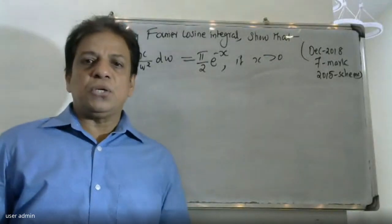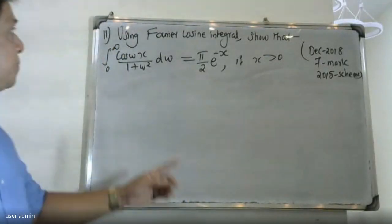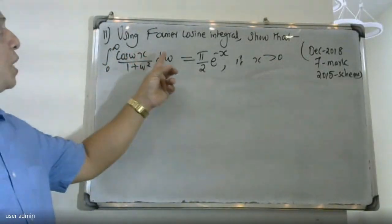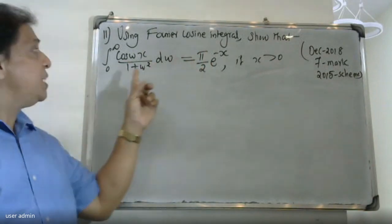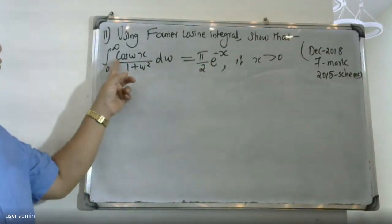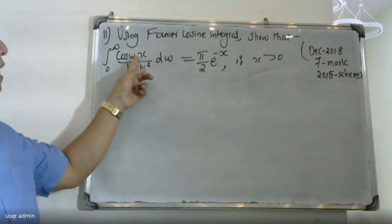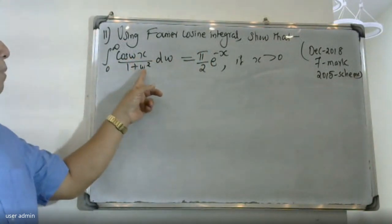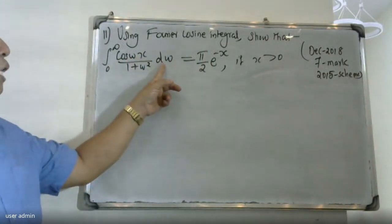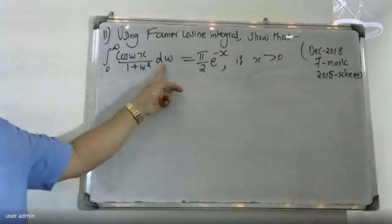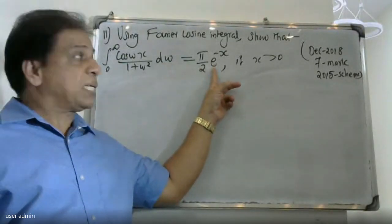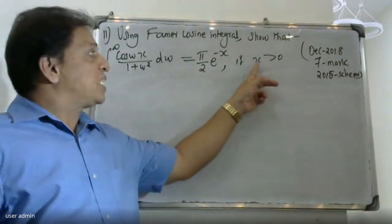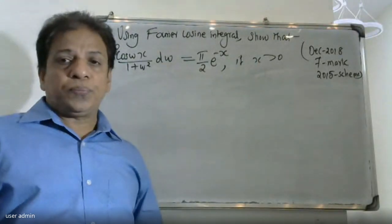Good morning students at the University of Straddhan. Using Fourier cosine integral, show that the integral from 0 to infinity of cos(ωx) divided by (1 + ω²) dω is equal to π/2 times e raised to minus x, where x is greater than 0.